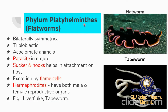Next Phylum is Platyhelminthes, which are flatworms. They are bilaterally symmetrical and triploblastic, having three layers: ectoderm, endoderm, and mesoderm. They are acoelomate animals and parasitic in nature. Suckers and hooks help in attachment to the host. Excretion is by flame cells. They are hermaphrodites — having both male and female reproductive organs. Best examples: tapeworm, flatworm, and liver fluke.